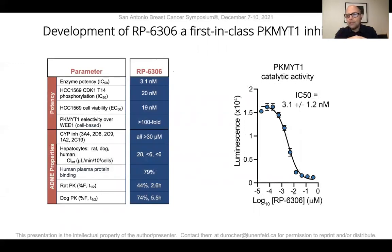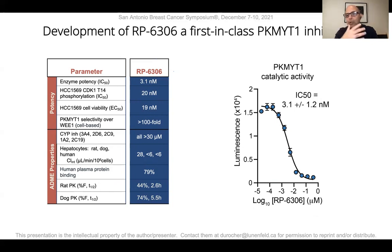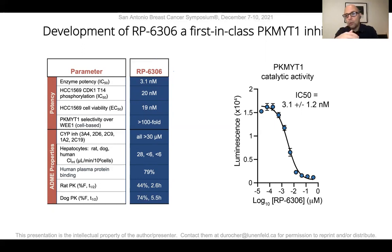At the time of this study, no such inhibitors were available. So our colleagues at Repair Therapeutics developed a highly potent and highly selective PKMYT1 inhibitor called RP-6306. In addition to being very potent and highly selective, RP-6306 has pharmacokinetic properties that make it an orally bioavailable inhibitor of PKMYT1. This inhibitor is currently in clinical development, and you'll hear more about it from Dr. Tim Yap.